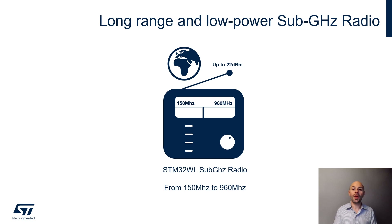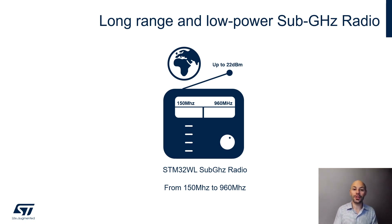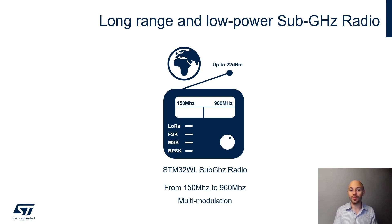The radio in the STM32WL provides a linear frequency range from 150 MHz to 960 MHz, giving full flexibility to meet each country's regulatory requirements. It supports multi-modulation: LoRa, but also FSK, MSK, and BPSK. With one single radio, it supports all use cases.